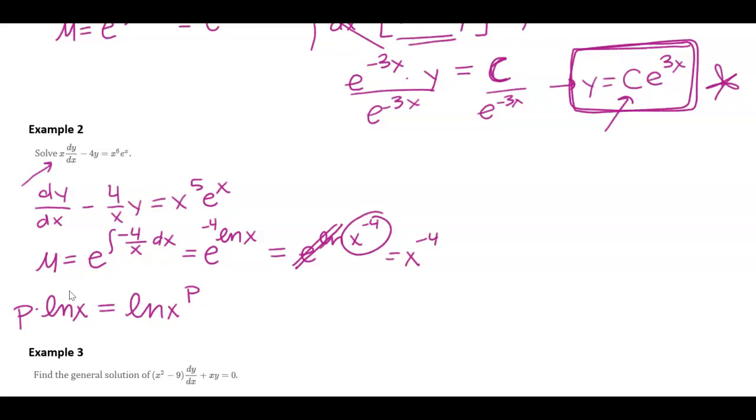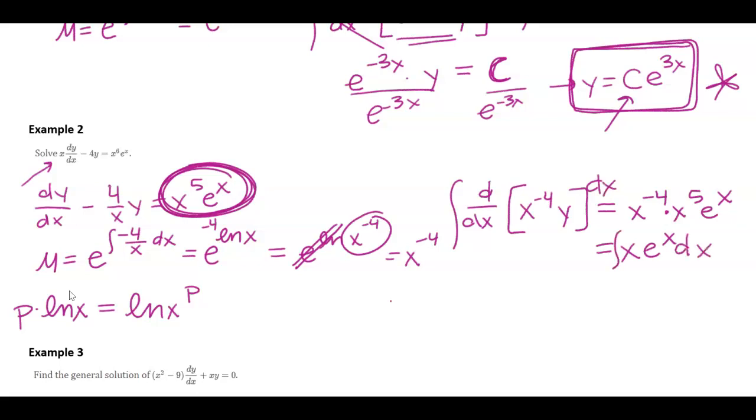Let's just shortcut and say, well, then I know the product rule of mu times y must be equal to the right-hand side times mu. So here we have x to the negative 4th times x e to the x. When I integrate both sides with respect to x, I get x to the negative 4th times y equals, I have parts here.